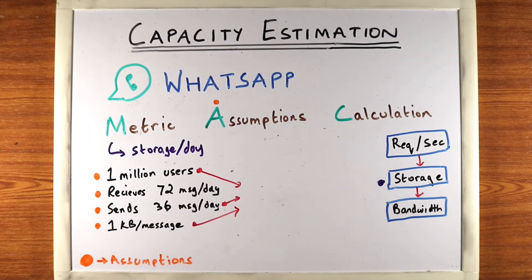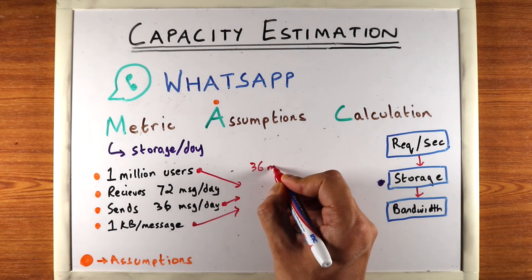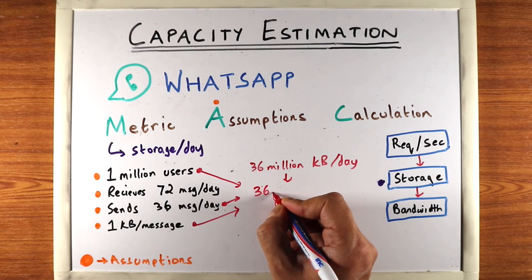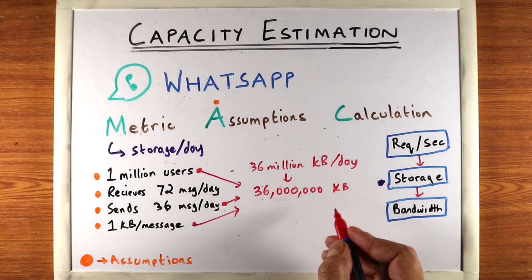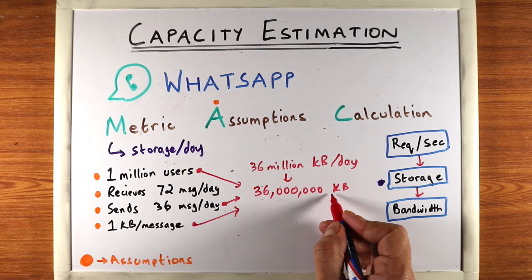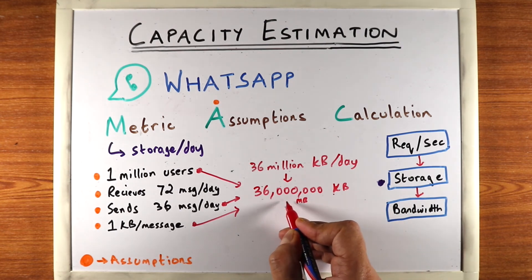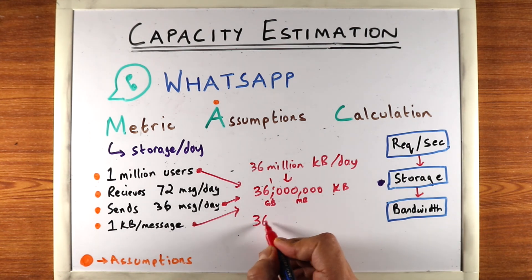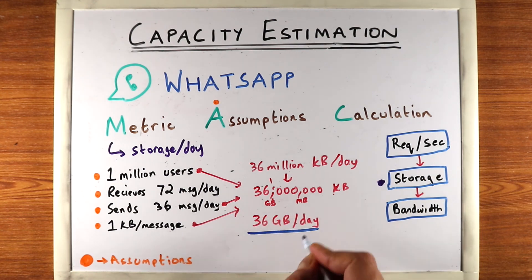With these three assumptions, we can figure out how much storage we need. We're sending 36 million messages, so we need 36 million kilobytes per day. To convert to more reader-friendly numbers: a million has six zeros, so in kilobytes — skip three zeros and you go to megabytes, skip three more zeros and you go to gigabytes. So we need 36 gigabytes of storage per day.